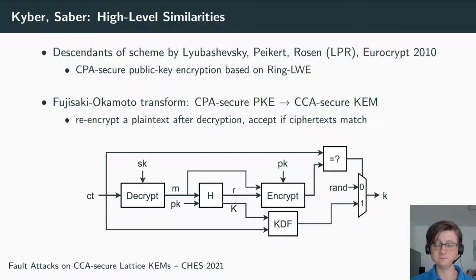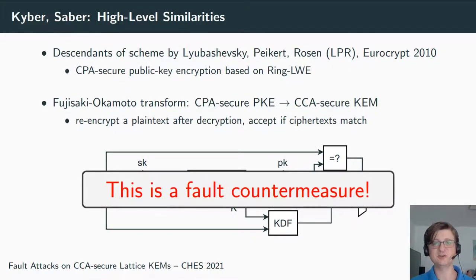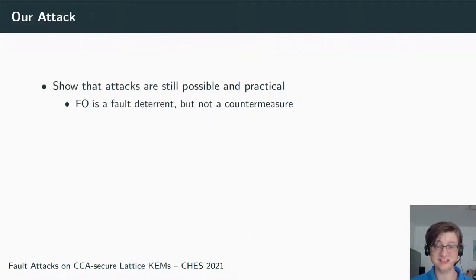Then you check if this re-encrypted ciphertext matches the received ciphertext. Only if these two ciphertexts match, then you release the true shared secret k. Otherwise, if they don't match, then you assume that the ciphertext was manipulated in some form, and then you return, for instance, a random shared secret or an error signal. We've seen constructions like that somewhere different as well, because what this is—decrypt, encrypt, and check if the same comes out again—this is essentially also a fault countermeasure that we often use in symmetric key cryptography.